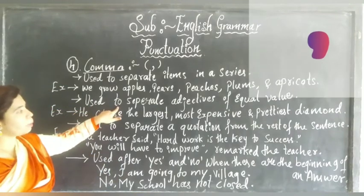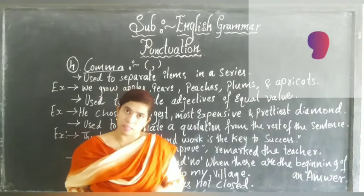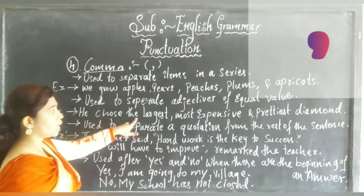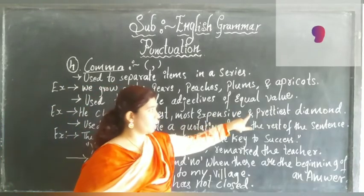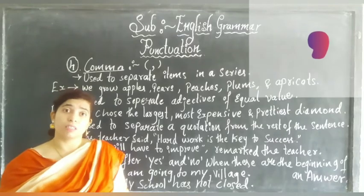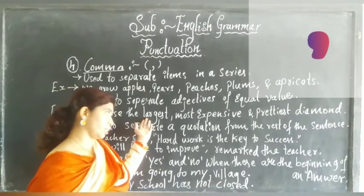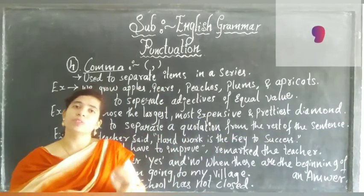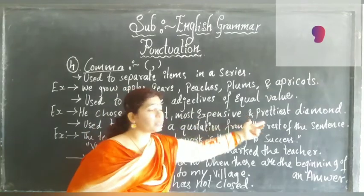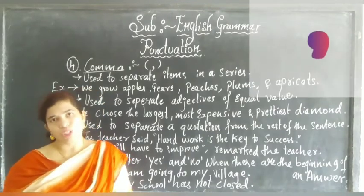Next, comma is used to separate adjectives of equal value. When we give different descriptive words for any item, we use a comma. For example, 'He chooses the largest, most expensive, and prettiest diamond.' We are showing the quality of the diamond by saying largest, most expensive, prettiest — and we use commas between those qualities.